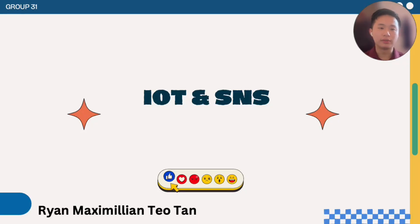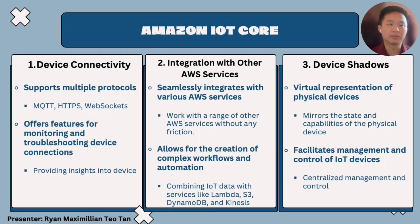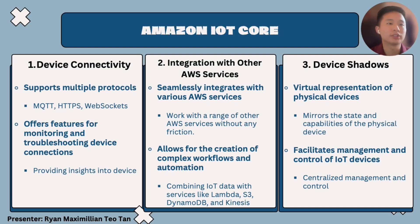My name is Ryan Maximilian Tiotan, student ID 2200530. Today I'll be presenting Amazon IoT and Amazon SNS for group 31. This slide is about Amazon IoT Core. First, device connectivity: it supports multiple protocols — MQTT, HTTPS, and WebSocket. This allows devices to connect to the AWS cloud using a protocol that best suits their requirements, whether it's lightweight or compatible with existing infrastructure. It also features monitoring and troubleshooting of device connections.